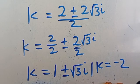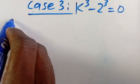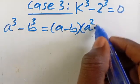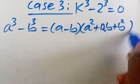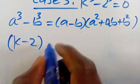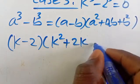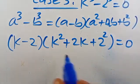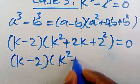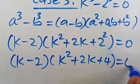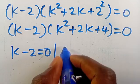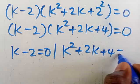Now for Case 2, recall that a cubed minus b cubed equals a minus b, multiplied by a squared plus ab plus b squared. So we have k minus 2, multiplied by k squared plus 2k plus 4, equals 0. For this expression to equal 0, either k minus 2 equals 0, or k squared plus 2k plus 4 equals 0.